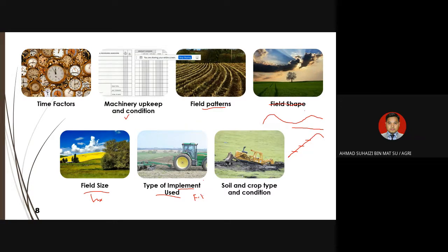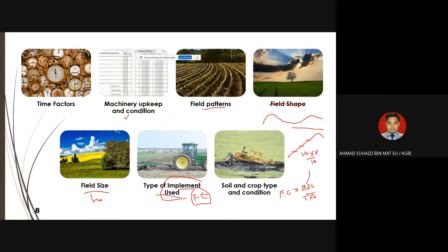The formula for EFC is: EFC = W × V / 10 × FE, where W is the implement width, V is speed, and FE is normally given or can be looked up from standard tables, since we already know the width and the appropriate speed from tables.